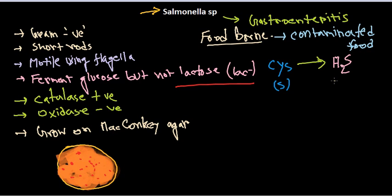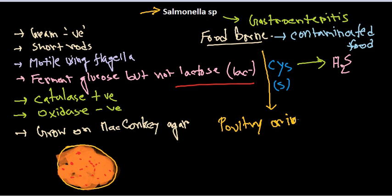This hydrogen sulfide gas smells like rotten eggs, so we can detect the presence of Salmonella by this smell. Salmonella infections are mostly foodborne and especially of poultry origin — poultry meat as well as eggs. We need to be very careful in choosing and cooking them properly before eating.